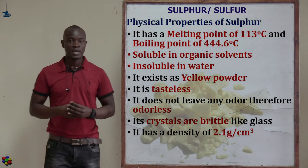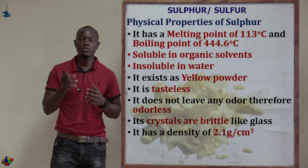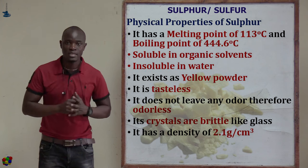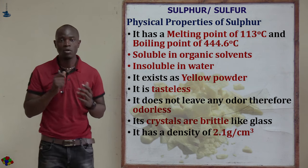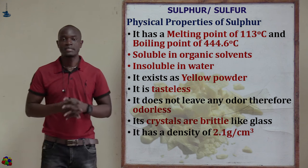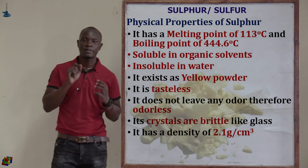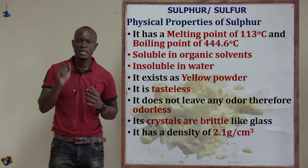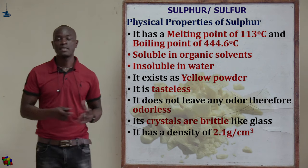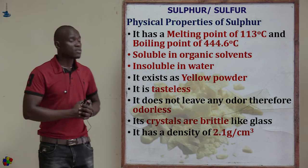Sulfur is a yellow powder. If you have ever sprayed a fire extinguisher containing sulfur, you will find yellow sulfur deposits on the ground. Sulfur is also tasteless and odorless. When observed using a hand lens, it forms very tiny brittle crystals. Sulfur has a density of 2.1 grams per centimeter cubed.